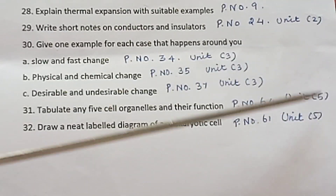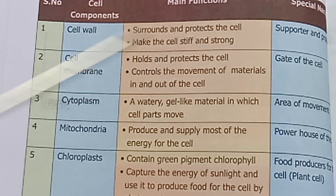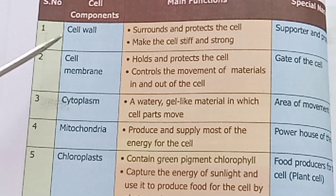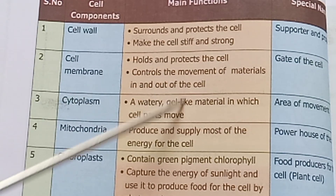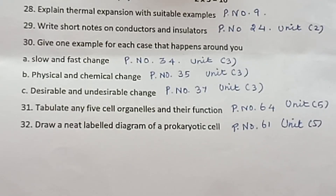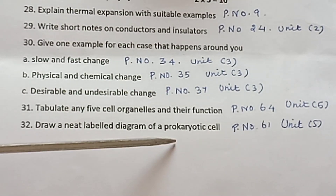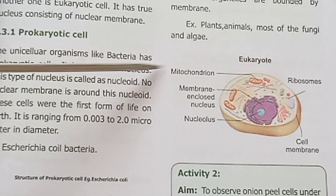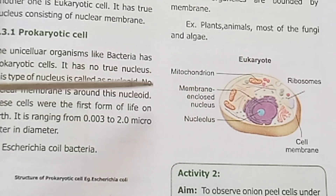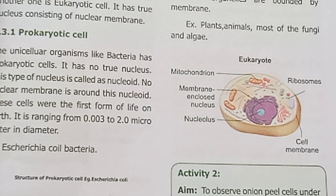Question 31: Tabulate any 5 cell organelles and their functions. Page number 64, Unit 5 — refer to the cell components and functions table, write any 5. Question 32: Draw a neat, labeled diagram of a prokaryotic cell. Refer to page number 61, Unit 5.